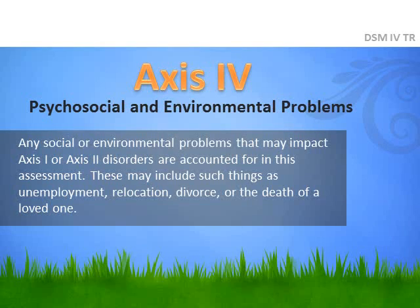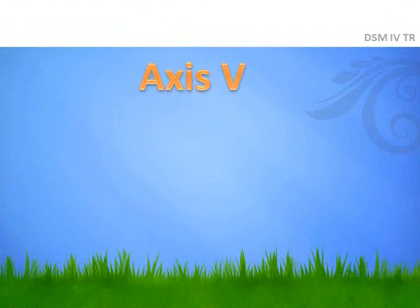Axis 4 describes psychosocial and environmental problems. Any social or environmental problem that may impact Axes 1 or 2 is accounted for in the Axis 4 assessment — things like relocation, divorce, death, or any kind of loss.